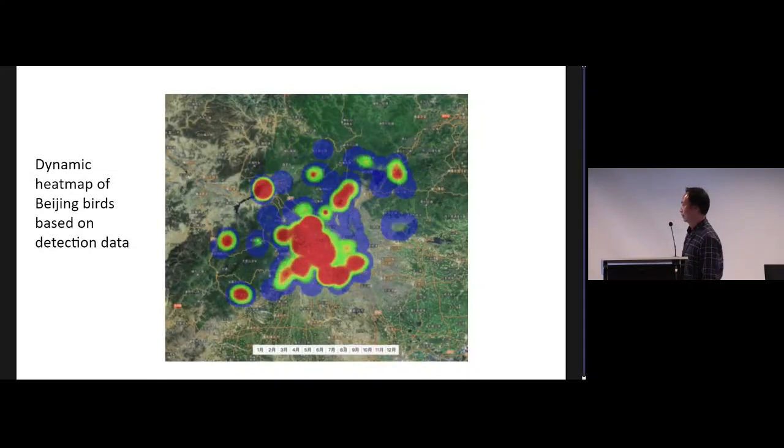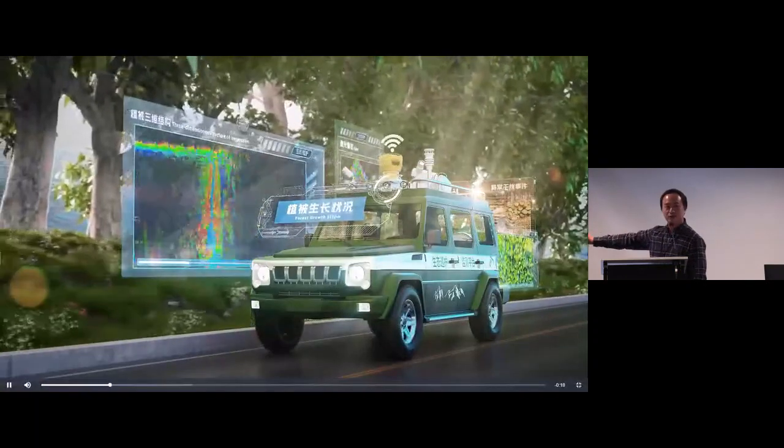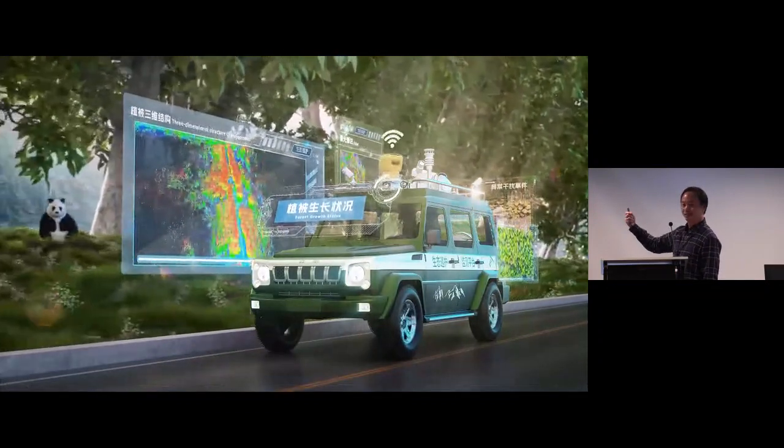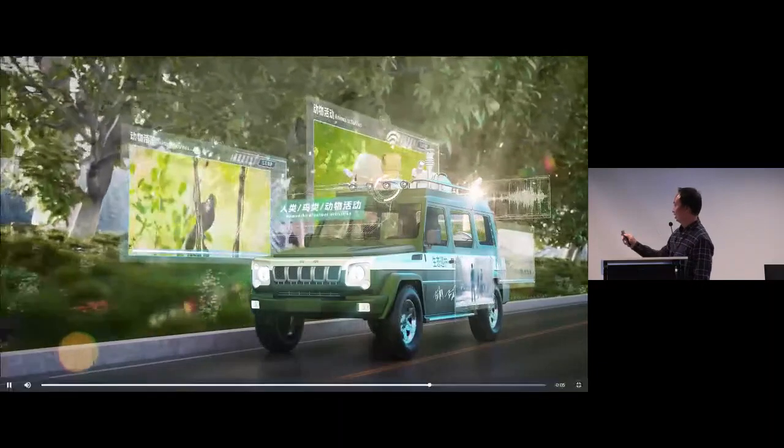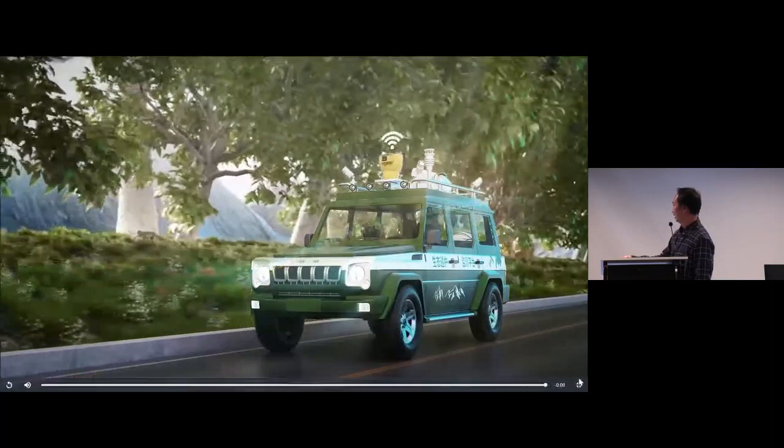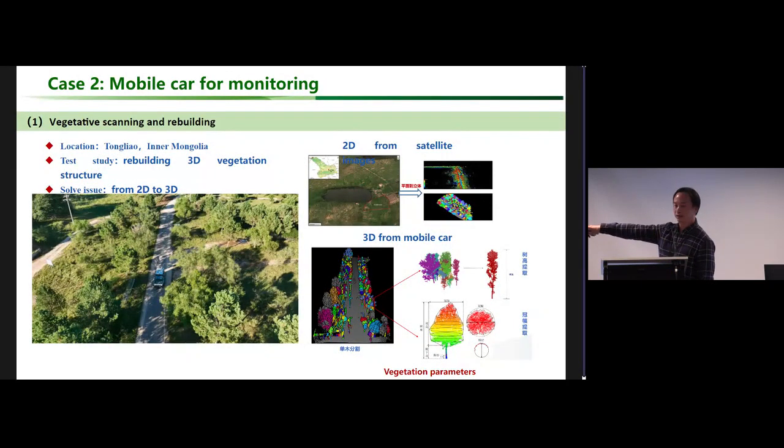The second case is about a mobile car. We moved all the sensors and incorporated them into a car with our detection system in the car. You can see the image - that is the mobile car. You can scan the vegetation along the road and rebuild a 3D vegetation structure.